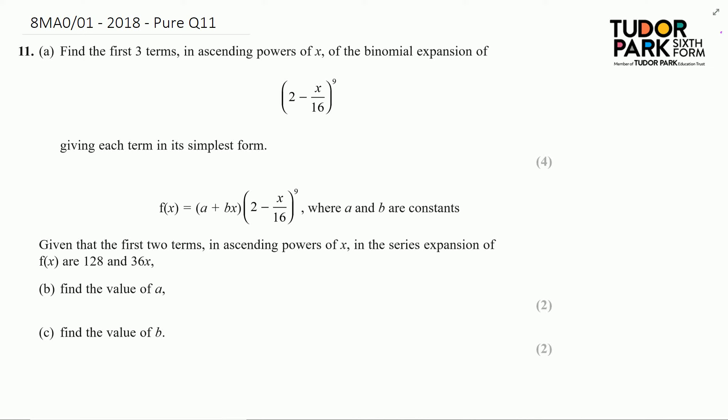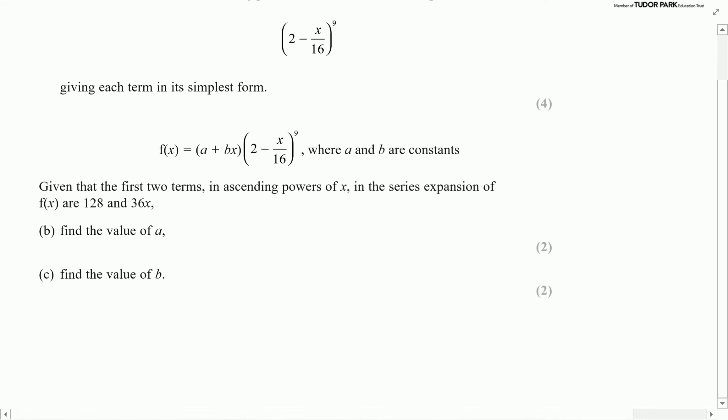So question 11 and we're on to a binomial expansion. We want the first three terms in ascending powers of x of the binomial expansion of 2 minus x over 16 to the power of 9.